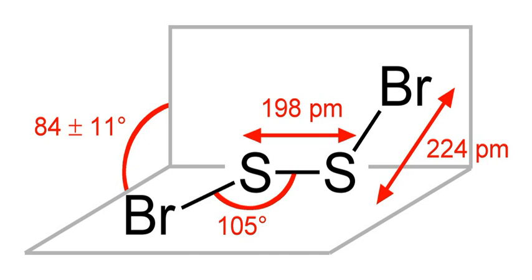Disulfur dibromide is the chemical compound whose molecule is composed of two atoms each of sulfur and bromine. The molecular structure is akin to that of hydrogen peroxide, H₂O₂. Disulfur dibromide is the most stable sulfur bromide; however, its thermal stability is low.